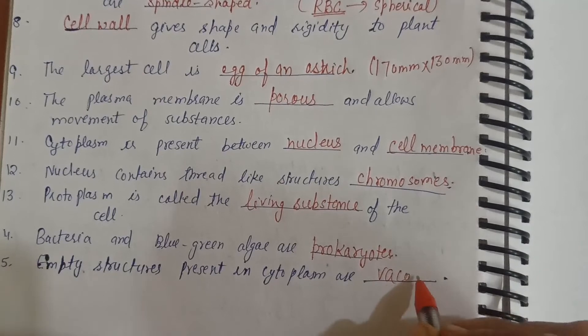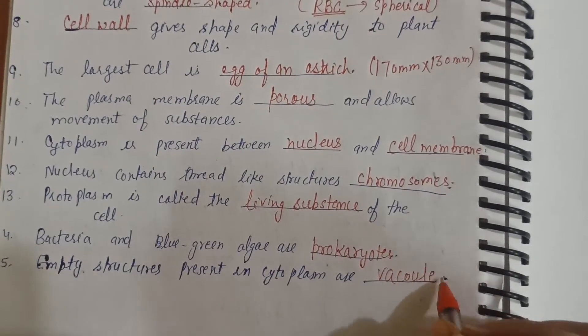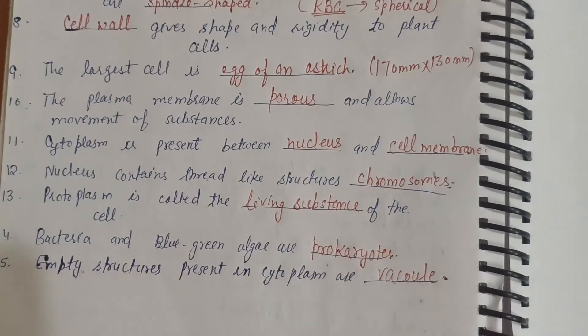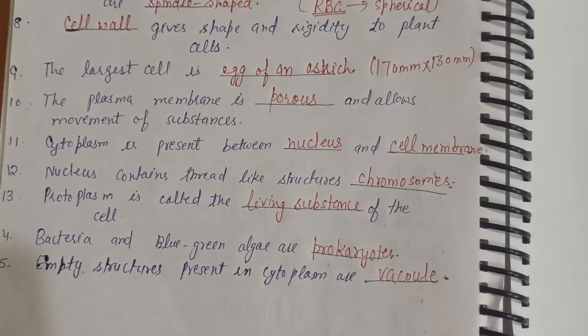In a plant cell there is one large vacuole, but in animal cells there are many small vacuoles.